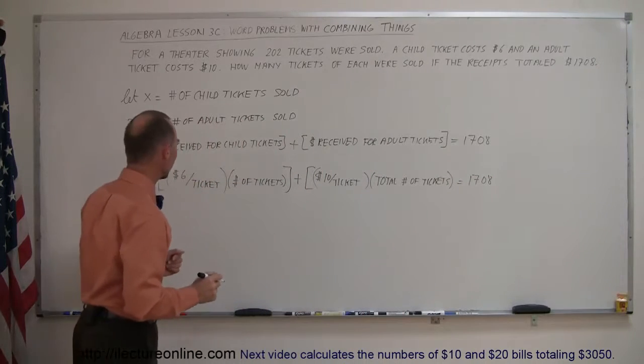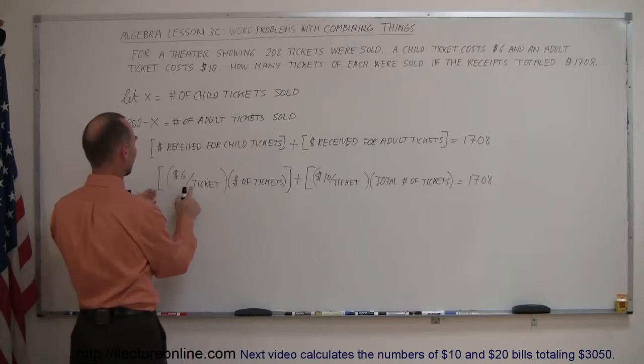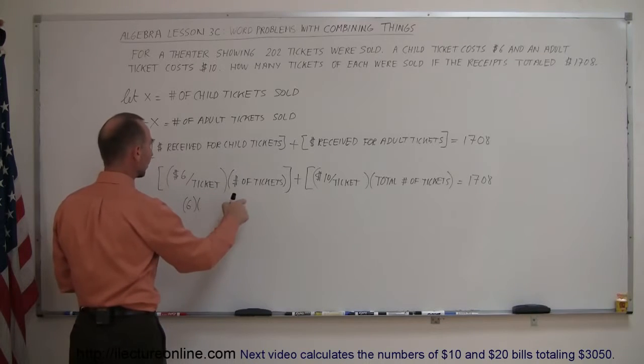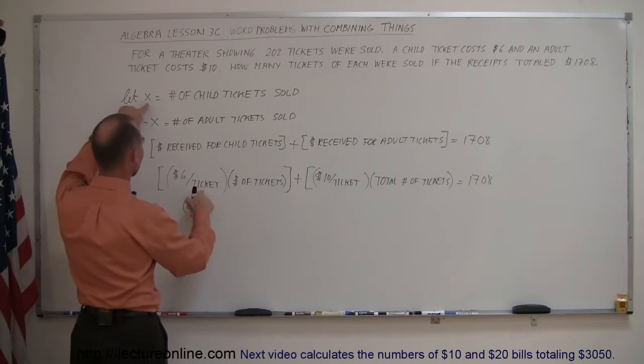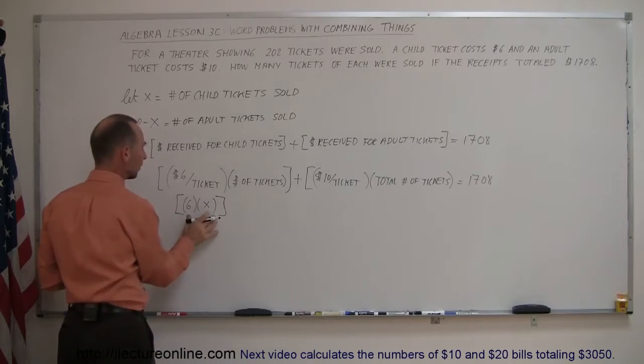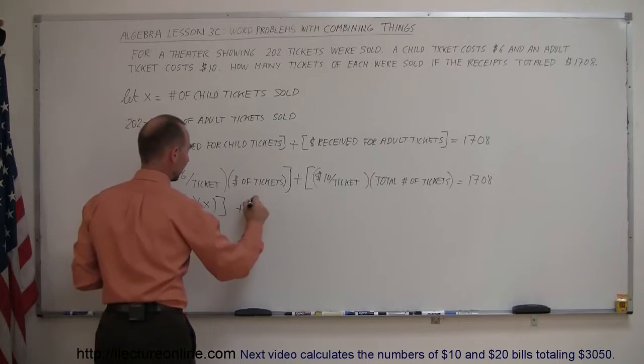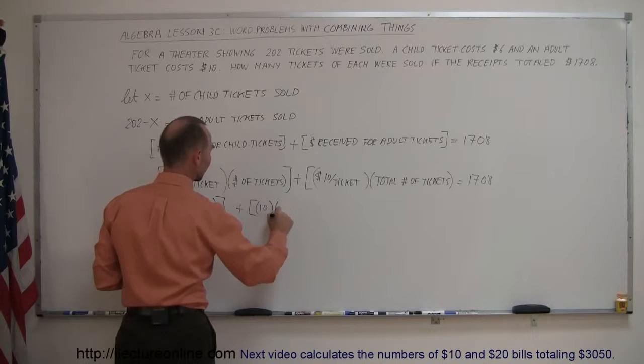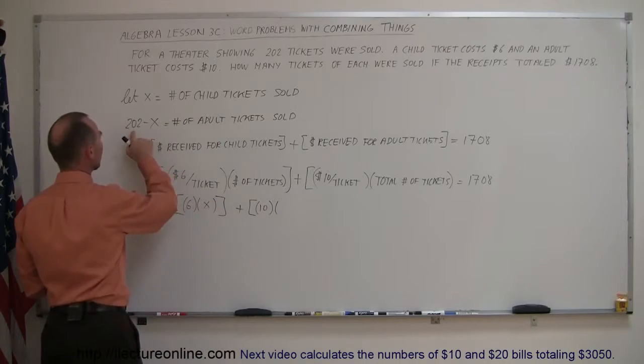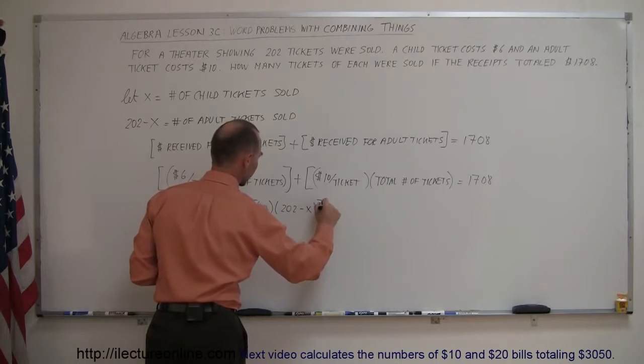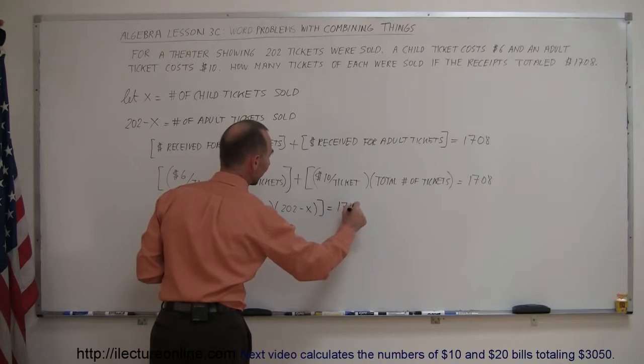Now, let's write in what those are. So, the number is $6 per ticket. So, that's six times the number of tickets, and these are children's tickets, the number of tickets is x. So, that's the total value of all the children's tickets, plus the dollar per ticket, that's 10, and multiply that times the number of tickets, which was 202 minus x for the adults. And that adds up to $1708.